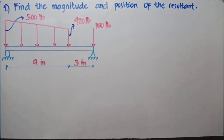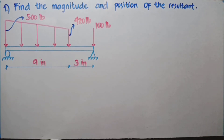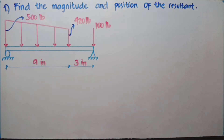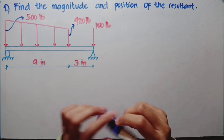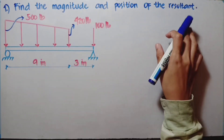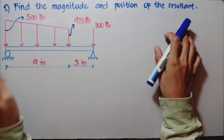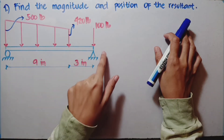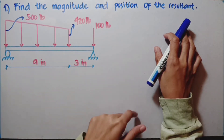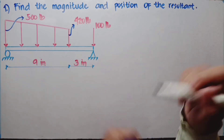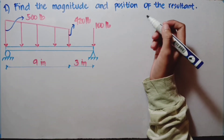For today's tutorial, I am going to discuss about the resultant, or how to get the resultant of a trapezoidal load. Our problem number one is to find the magnitude and the position of the resultant in this figure. We have a trapezoidal load and a simple load which is 100 pounds, and we are going to find the magnitude first.